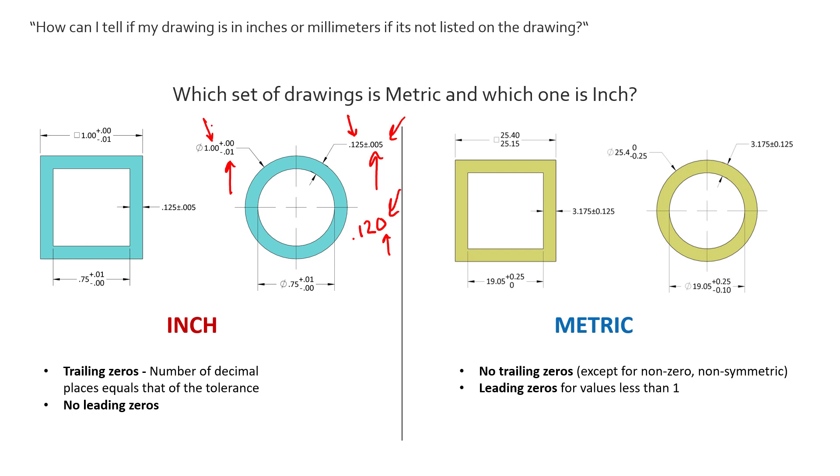Another unique thing about inches is there's no leading zeros. So you'll see for values that are less than one we have .75 not 0.75. So inch drawings will always be missing leading zeros for values less than one.